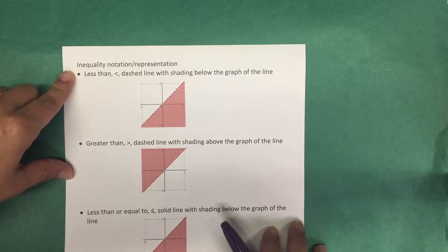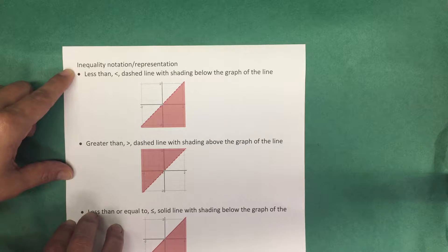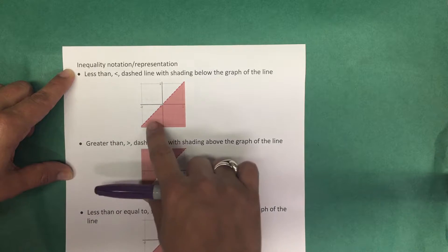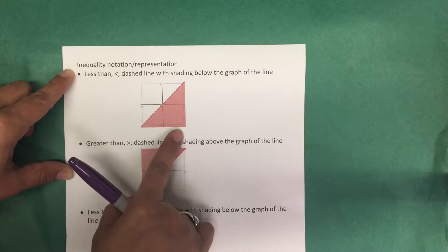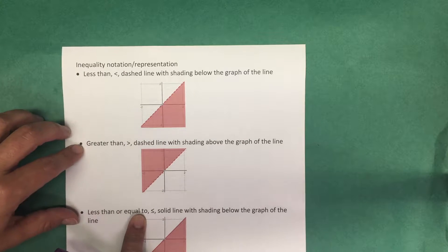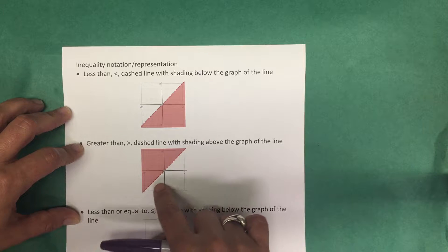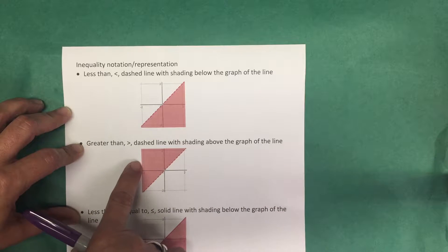For the inequality less than, when you're graphing on the coordinate plane, the line is going to be dashed and the shading is going to be below the graph of the line. When we have the inequality greater than, the line is going to be dashed and the shading is going to be above the line.